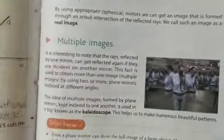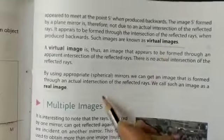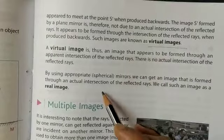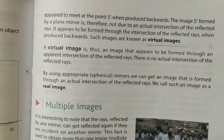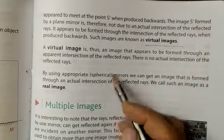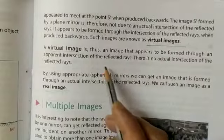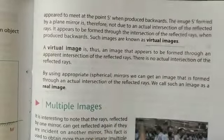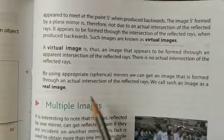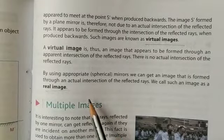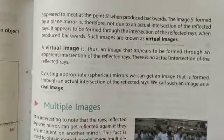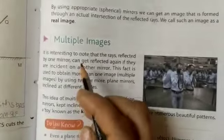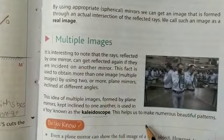Now, real or virtual image. An image that appears to be formed through the apparent intersection of the reflected rays is said to be a virtual image. An image which is formed through the actual intersection of the reflected rays is said to be the real image. Then you are having multiple images.